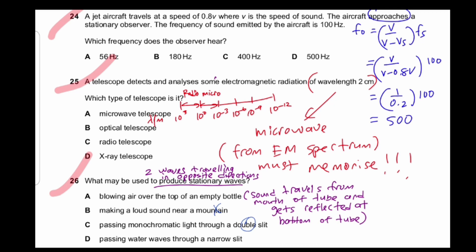And passing water through a narrow slit is just diffraction spreading of the wave. So there are no two waves coming in the opposite direction. So you cannot use that.